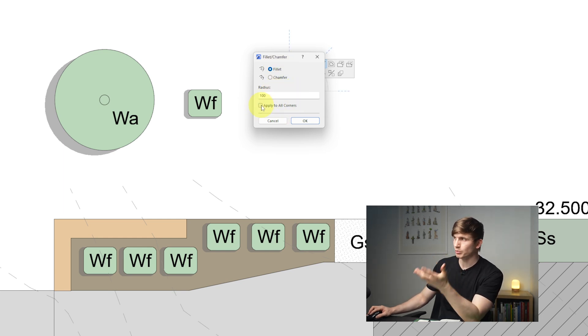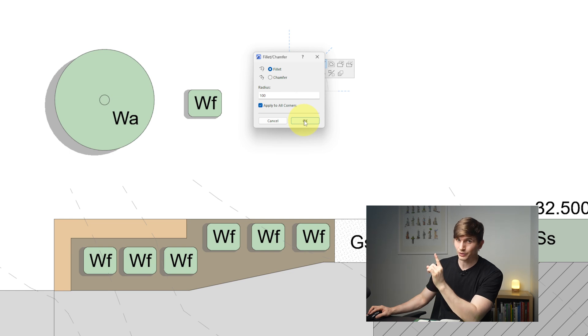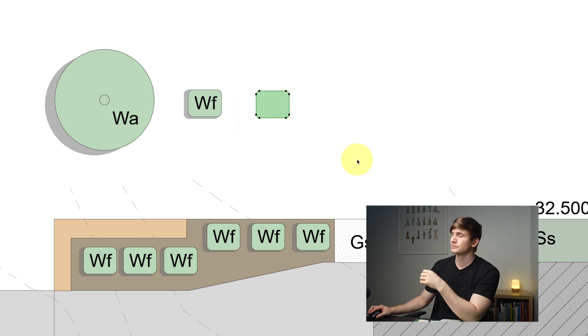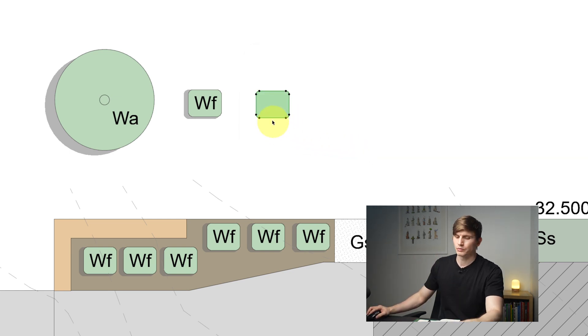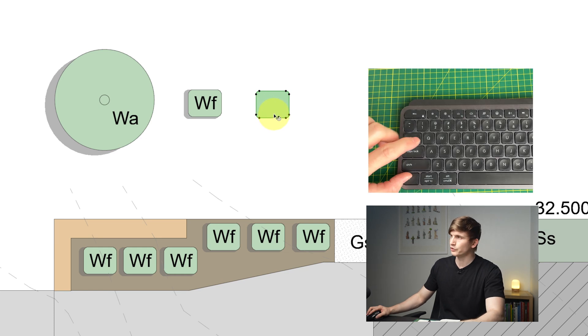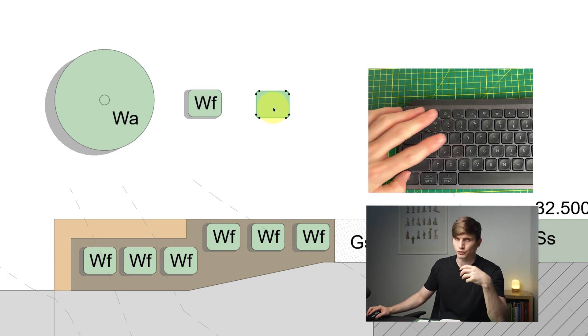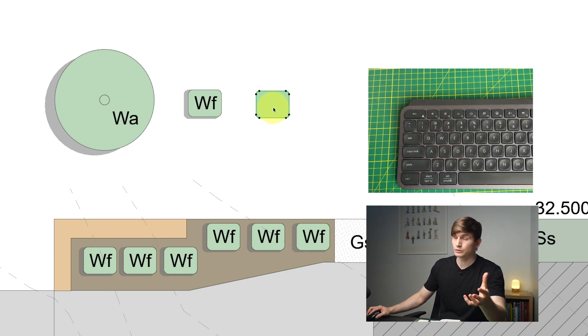We want this for all corners, so go Apply to All Corners and click OK. Just like that, we've got our first plant. To give it extra depth, go Ctrl+D to activate the drag tool.